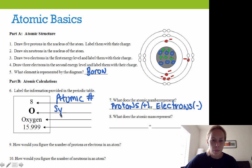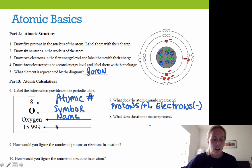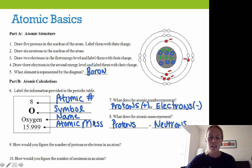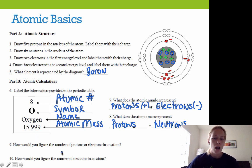Right here is the element symbol — those letters are referred to as the atomic symbols. Right here is the element's name, and down here is the element's atomic mass. Atomic mass can be found by adding the number of protons found in the nucleus with the number of neutrons found in the nucleus. Typically, atomic mass is a decimal because it's an average of all the different isotopes, and for our purposes we'll round to the nearest whole number — usually rounding up.